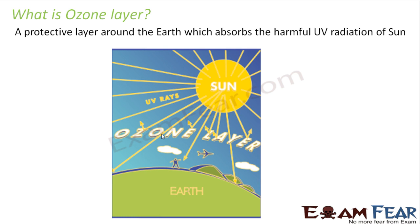You might be thinking: what is ultraviolet radiation? The sun emits many different types of radiation — like visible light, which enables us to see, infrared radiation, and ultraviolet radiation. Out of all these radiations, ultraviolet radiation is very high energy. Since it has too much energy, it is to some extent harmful to the living cells.